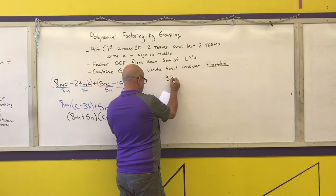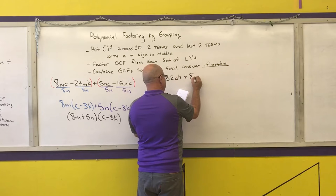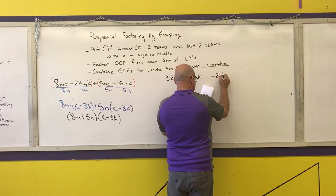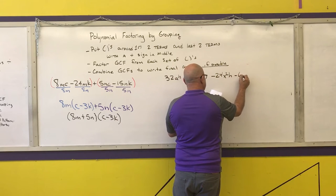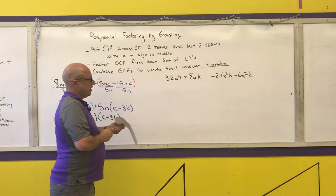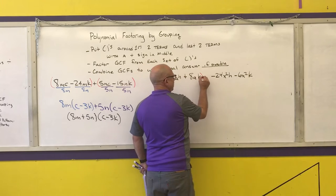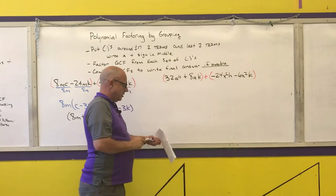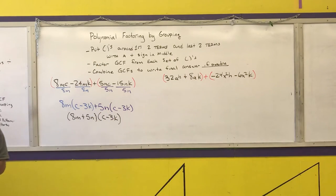Last example: 32AH plus 8AK minus 24X squared H minus 6X squared K. Step 1 — parentheses around the first two, parentheses around the last two, plus sign in between. Step 2 — factor out the greatest common factor out of each group.